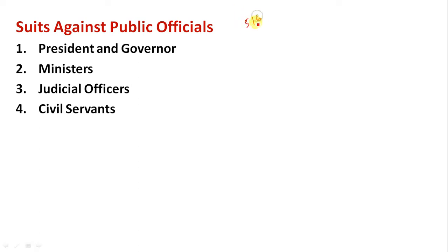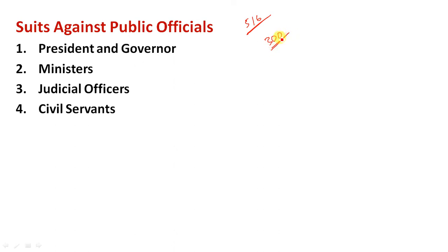This is based on Article 300. Our constitution recognizes the Union of India — meaning we are aware of the right. The legal person is considered as a legal person, and the Union of India is the state.